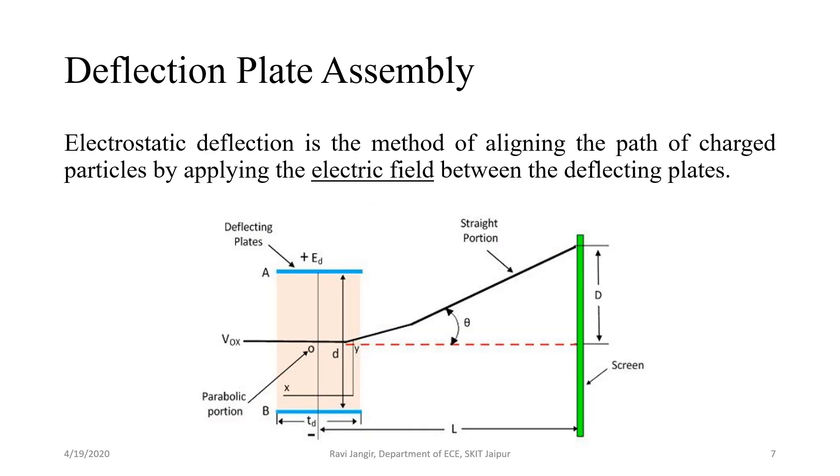Next part of CRT is deflection plate assembly which also uses electrostatic deflection. Electrostatic deflection is a method of aligning the path of charged particles by applying the electric field between the deflecting plates. The cathode ray tube uses deflecting plates for modifying the path of electrons. The electrons after exiting through the electron gun pass through deflecting plates.